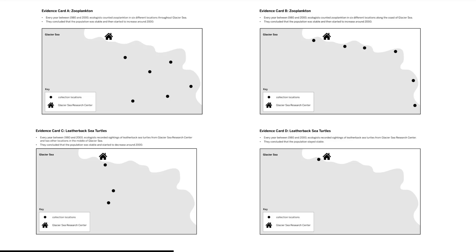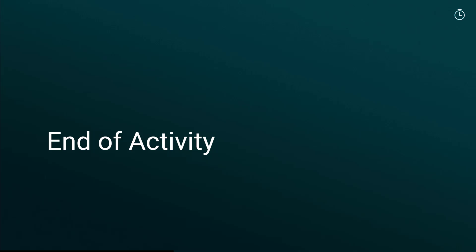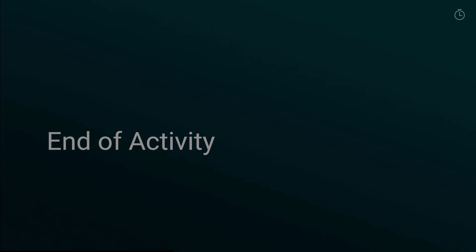Students, revisit evidence cards A through D from Lesson 2.7, along with the new evidence cards E through G, to decide which evidence supports or goes against the claims. End of activity.